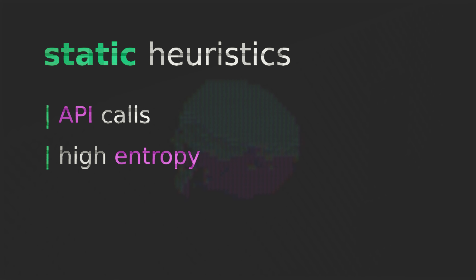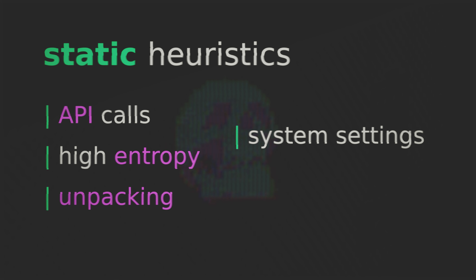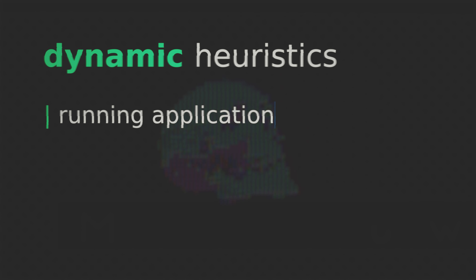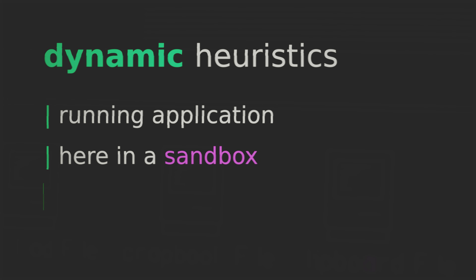Static heuristic analysis also looks for high levels of entropy that indicate code might have been heavily obfuscated, the presence of unpacking routines or dynamic code generation, code that might be modifying system settings for persistence, and whether the code is looking for the presence of a sandbox or VM. And it's exactly this last point that we'll discuss now in dynamic heuristic analysis. Dynamic analysis means actually running the application, and both heuristic and behavioral detection have dynamic components.